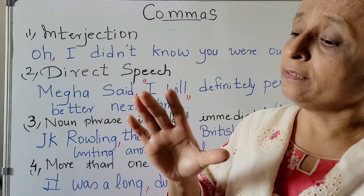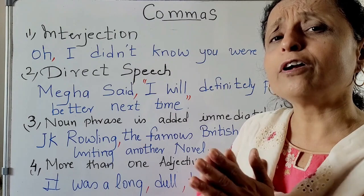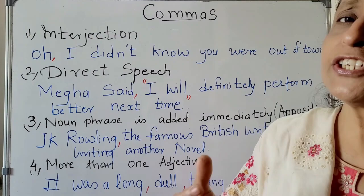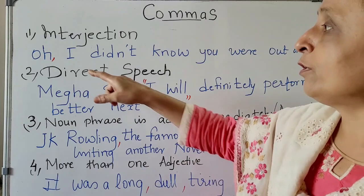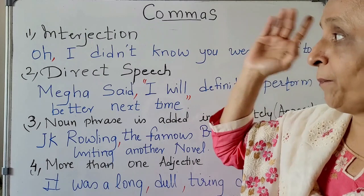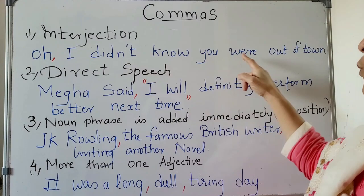Now you use a comma in other places also, like interjections. An interjection is a strong feeling — 'oh,' 'well.' At that time you have to put a comma. Interjection is a strong feeling; after that pause you start your sentence: 'Oh, I didn't know you were out of town.'